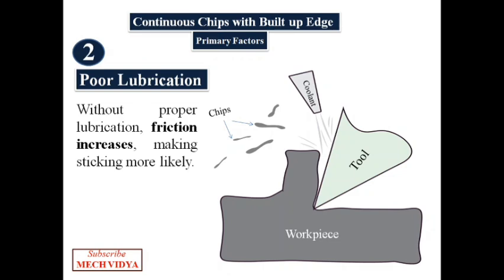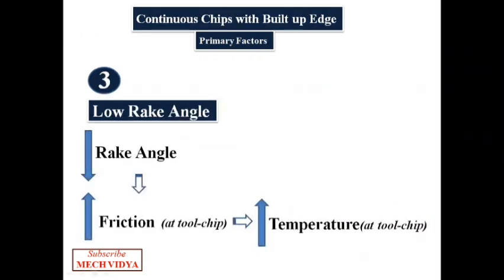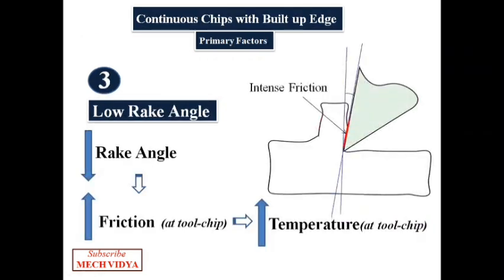Next is low rake angle. In this diagram we can see that if the rake angle is very low, the chips while coming out have a tendency to rub against the rake face, thereby generating a tremendous amount of friction which gets converted to temperature at the tool-chip interface, and this temperature gives rise to the built-up edge.